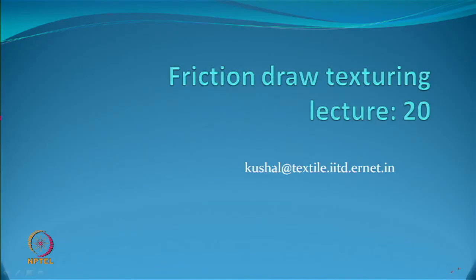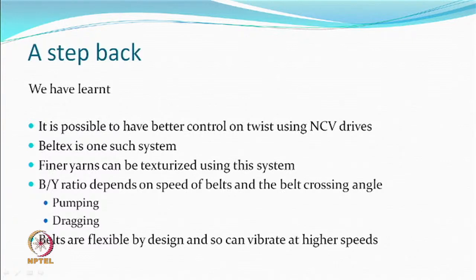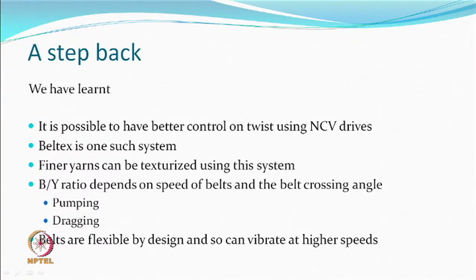In this lecture, we will cover one of the other ways in which twisting can be done for false twist or draw texturing systems. Till now, we have understood that it is possible to have better control on twist using nip-controlled vector drives. Beltex is one such system, almost similar to hand spinning, and because of this better control on twist, finer yarns can be texturized using this system.